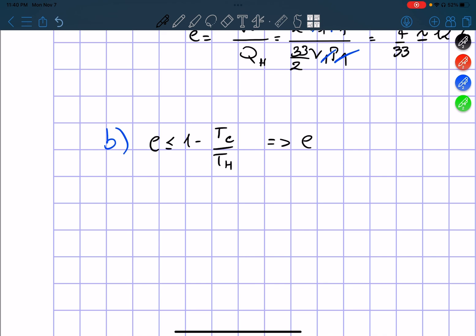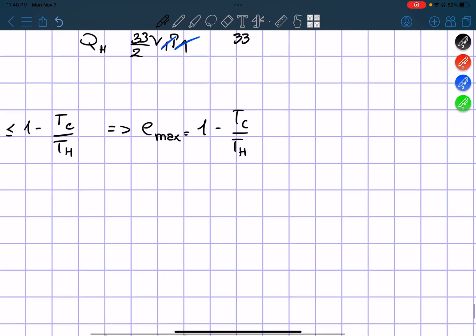If you want the max, the max is equal to 1 minus T cold divided by T hot.